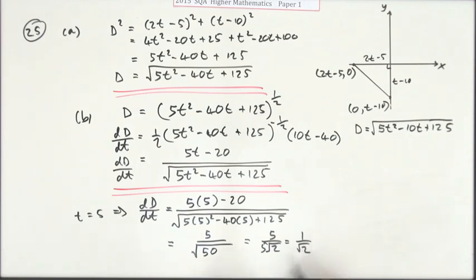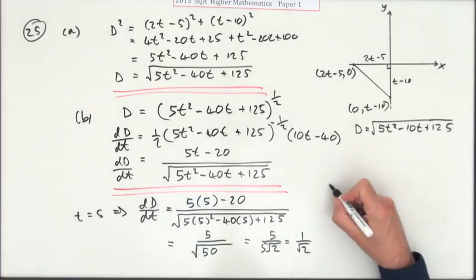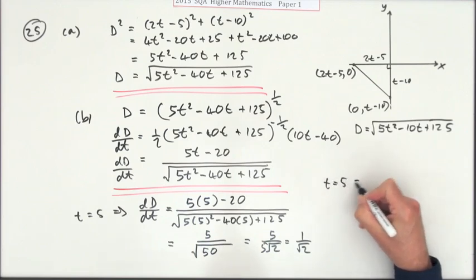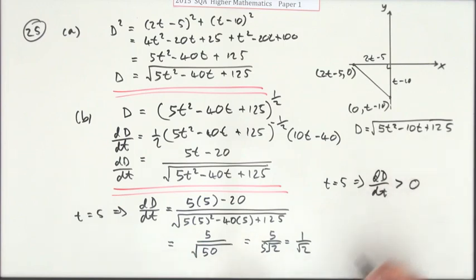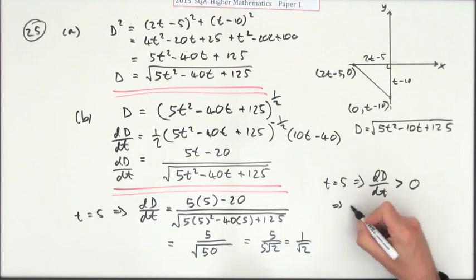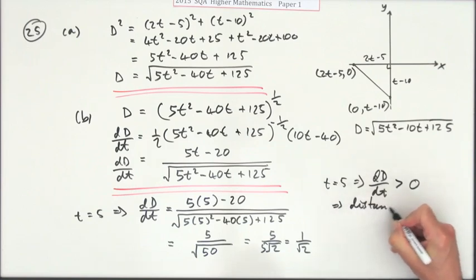Shouldn't need any of that because in the end you just want to know is it increasing or decreasing. You're going to make this statement: t equals 5 means that the rate of change is greater than 0, which means that the distance is increasing.